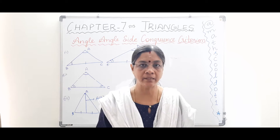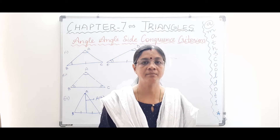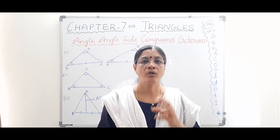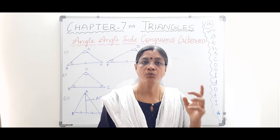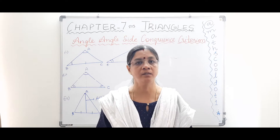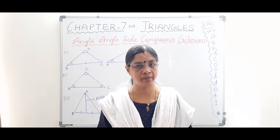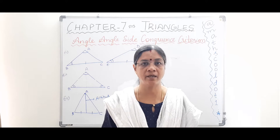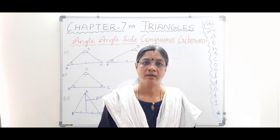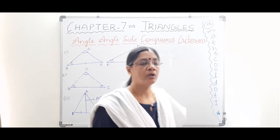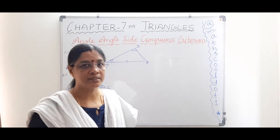Remember to spot two triangles in any congruency problem. When you spot the triangles, name them properly in order — the rest will fall into place automatically and you will find it much easier to prove the remaining conditions. Now let's move on to the Angle-Angle-Side congruency criterion.